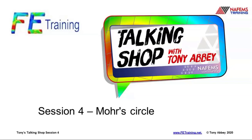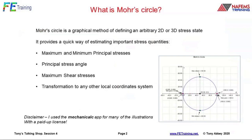We're going to look at Mohr's Circle — what is it? It's a graphical method of defining either a 2D or 3D stress state. The important thing is it's a quick way of estimating our important stress quantities: maximum and minimum principal stresses, principal stress angle, maximum shear stress, and transformation to any other local coordinate system. Here's a shot of Mohr's Circle. There's an app online called Mechanical — it's very useful for laying out the Mohr's Circle to scale, and I've used that and taken screenshots.